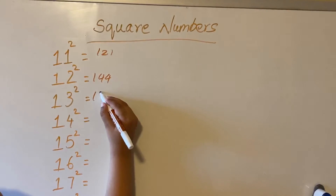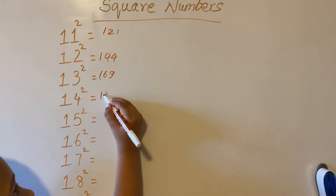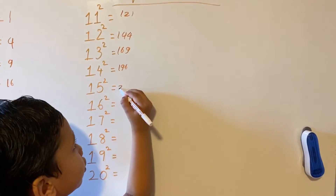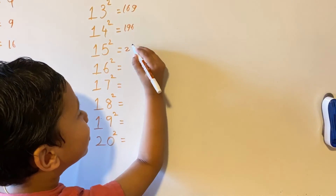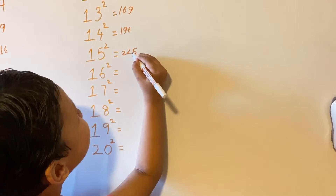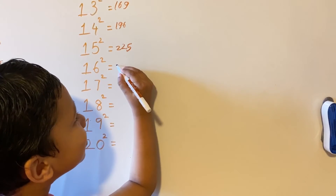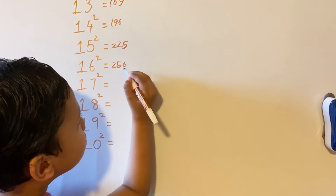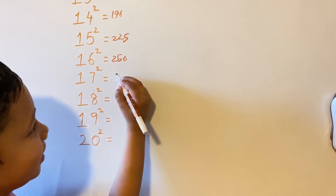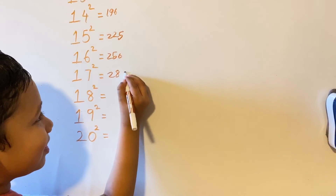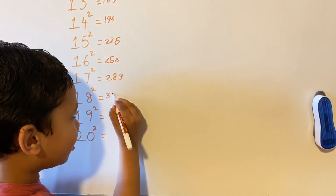Thirteen square is one sixty-nine. Fourteen square is one hundred and ninety-six. Thirteen square is two hundred and twenty-five. Six square is two hundred and twenty-five. Seven square is two hundred and eighty-nine. Eighteen square is three hundred and twenty-four.